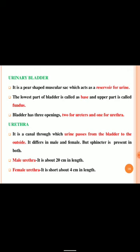The urinary bladder is a pear-shaped muscular sac which acts as a reservoir for urine. After collection in the kidney, urine passes through the ureter and is finally collected in the urinary bladder. The lowest part of the bladder is called the base and the upper part is called the fundus. The bladder has three openings: two for the ureters and one for the urethra.